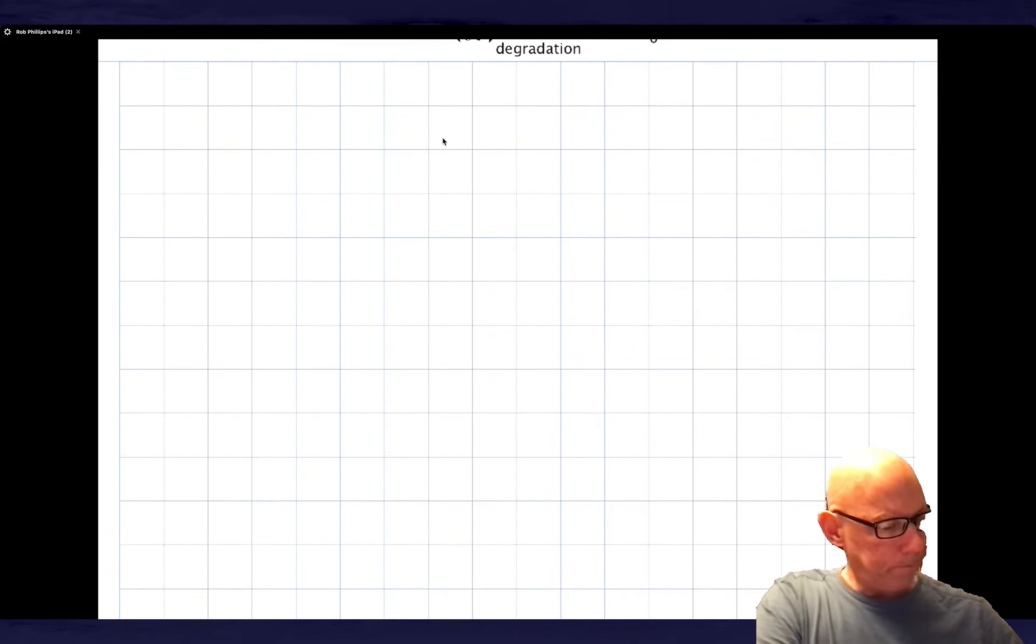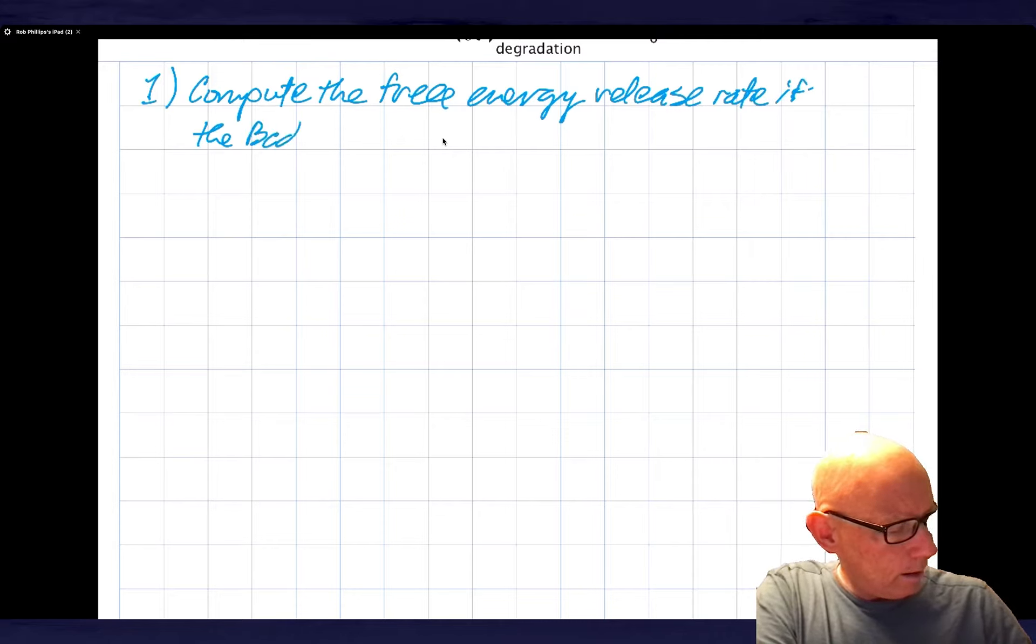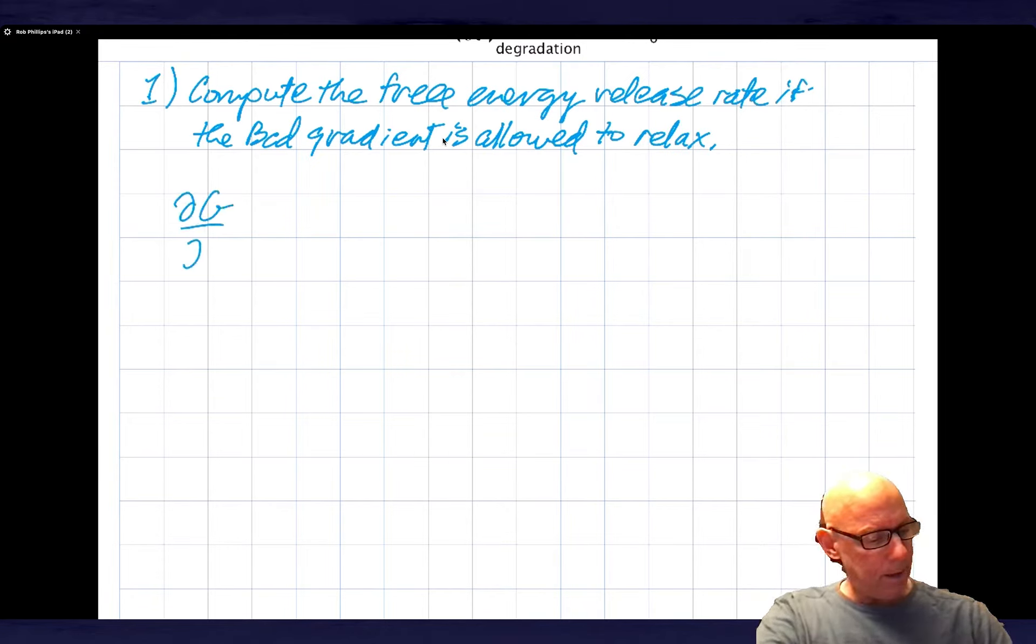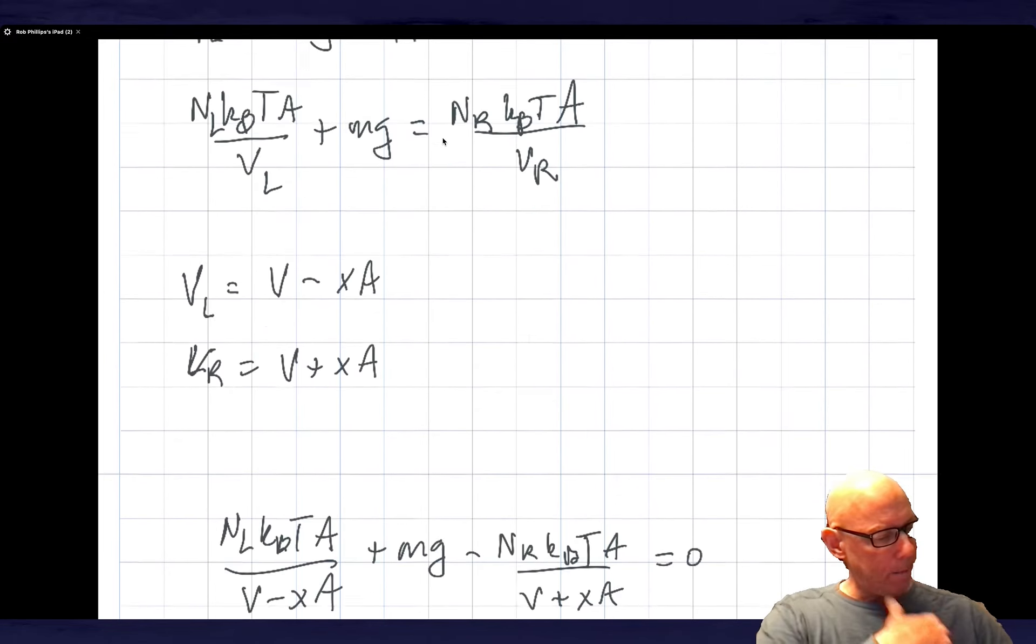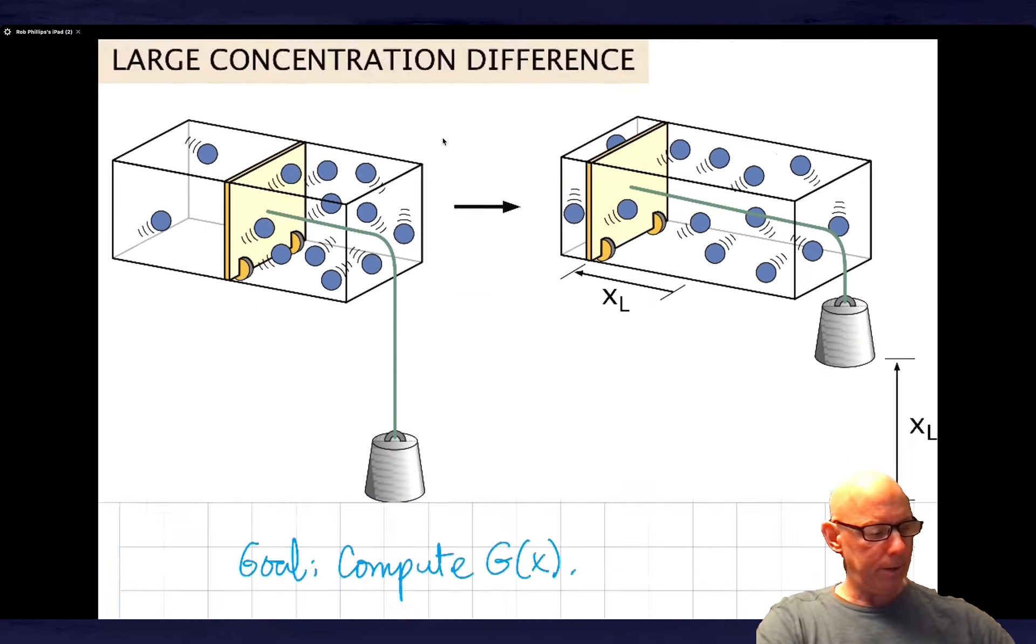So what are we about? Topic number one is we want to compute the free energy release rate if the Bicoid gradient is allowed to relax. And you'll see that I wrote this dG/dt, and I said that was minus D times kBT, and then I'm just going to call it an integral from 0 to L dx of 1 over c dc/dt. So if we go back up here, this is what we derived. So my only change relative to this expression is the integral over dy dz, I've replaced with A. I'm not going to worry about the perpendicular direction.